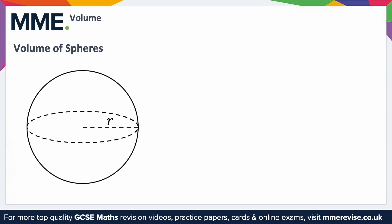So for a radius r, the volume of a sphere is 4 thirds pi r cubed.